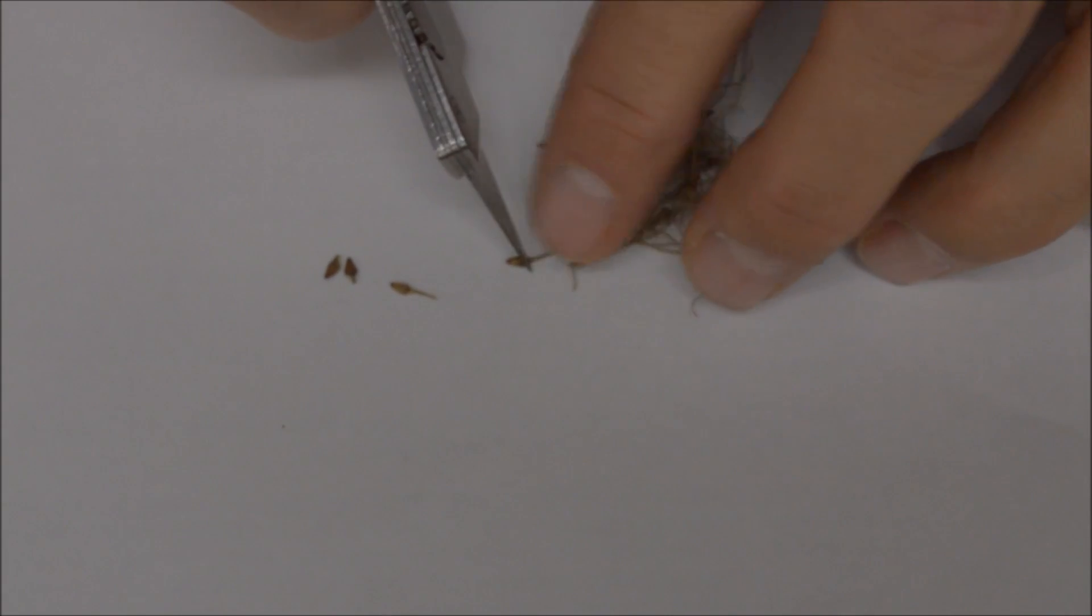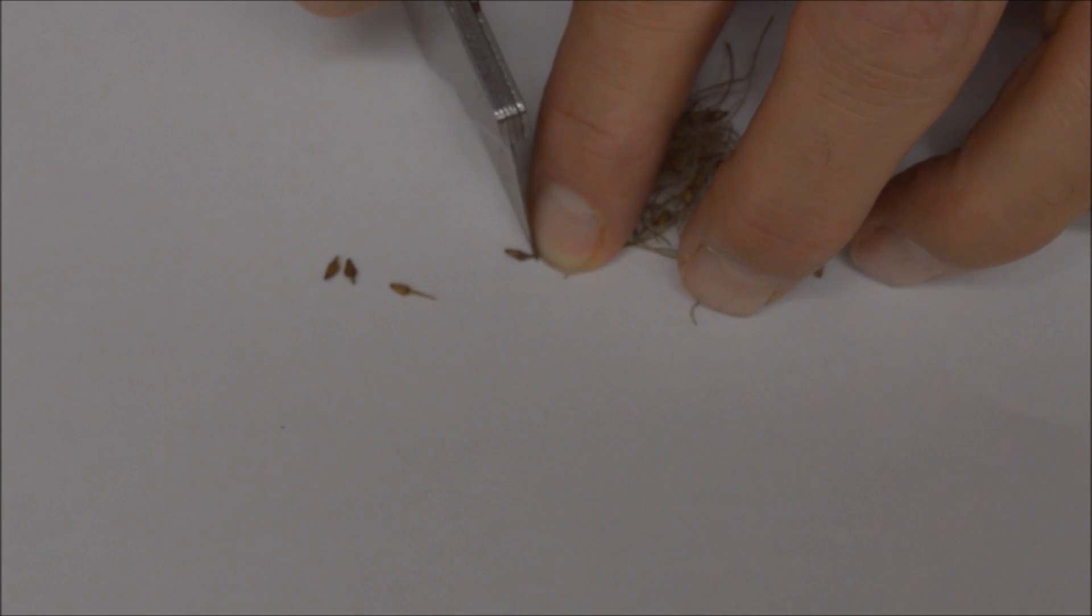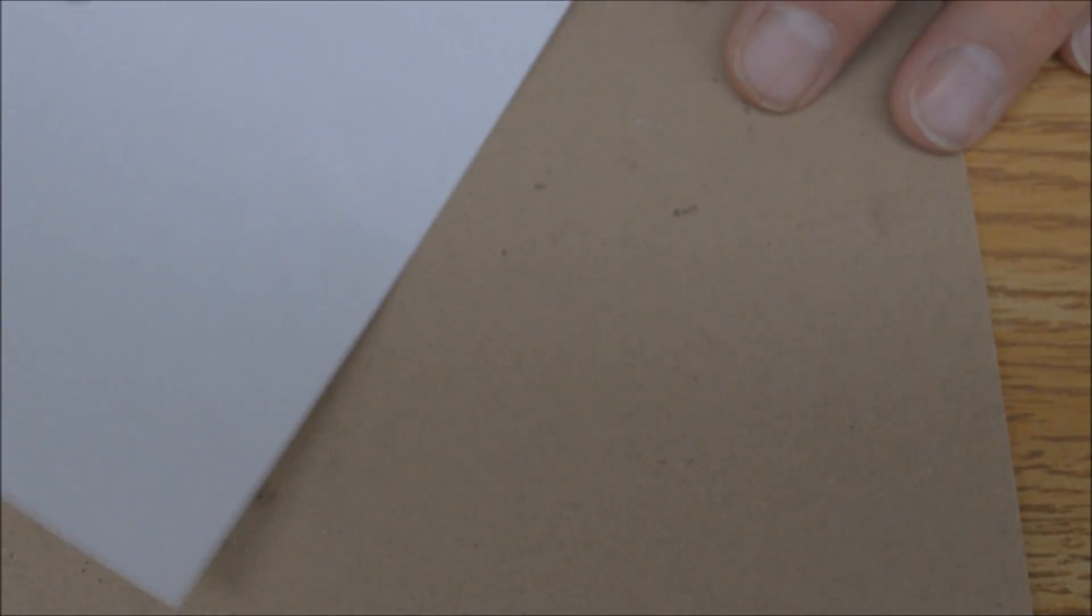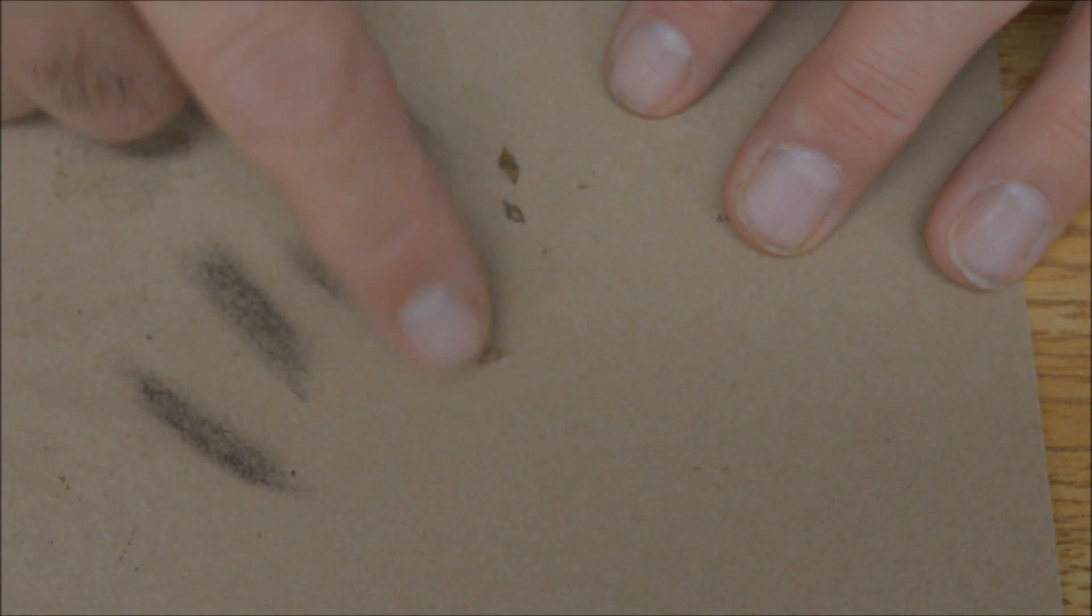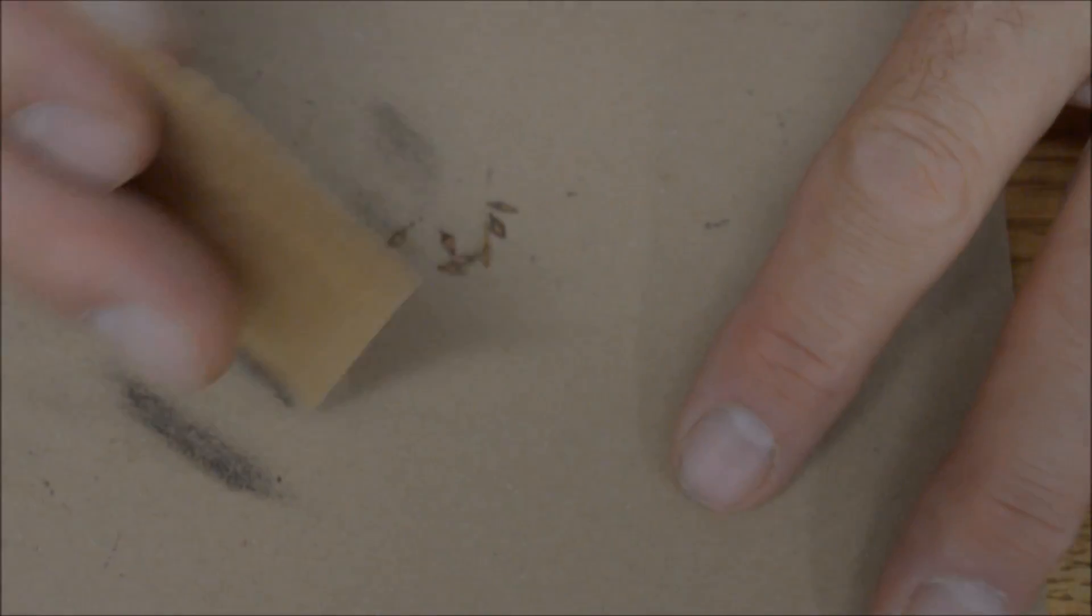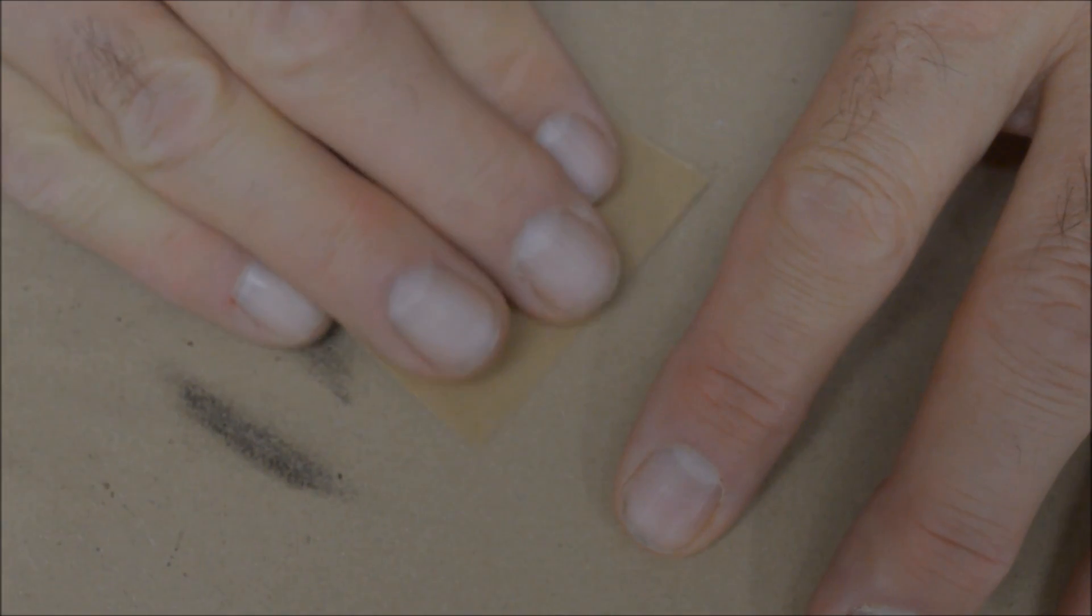Clematis seed do not need to be scarified, but I am going to use them to demonstrate how to scarify small seed. Take a sheet of sandpaper and lay it flat on the table. Place the seed on top. Now take a smaller piece of sandpaper and cover the seed. Gently slide the top sheet back and forth.